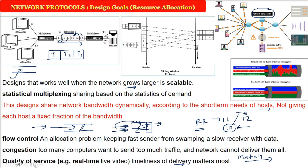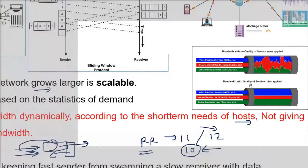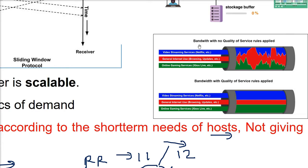Quality of service can be seen like this: without QoS rules applied, bandwidth usage is irregular and unpredictable. But if you apply QoS properly, the channel should behave like an ideal channel.